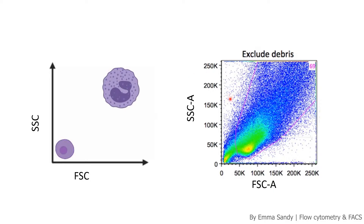This data quickly gets overcrowded, so we add extra colours to make it slightly more clear. Up here you can see the really granular and large cells, and down here you can see small pieces of debris. Somewhere in the middle we've got all the cell populations. We're interested in the cells and not the debris, so we select them — and this is called gating. We only take these cells forward and look for the next thing, which excludes all the debris.